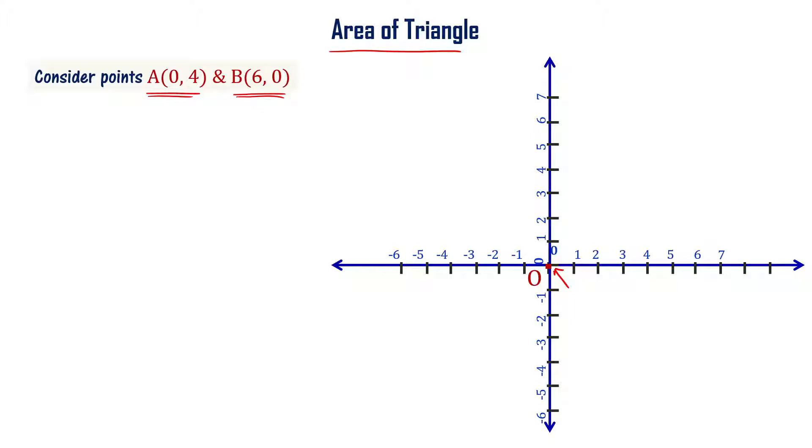Point A has x-coordinate value 0 and y-coordinate value 4. It's a point on the y-axis. Point B has x-coordinate value 6 and y-coordinate value 0, which is on the x-axis. Now you connect them, so what I have is a triangle.